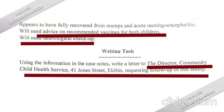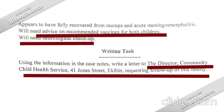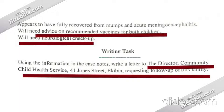Whenever you get the question paper, the first thing you have to do is read the writing task from start to end — that means: using the information in the case notes, write a letter to the Director, Community Childhood Service, 41 John Street, Epping. This is an unknown case — it is only a referral letter. From the writing task we can determine to whom we are writing and for what purpose: we are requesting follow-up of this family.